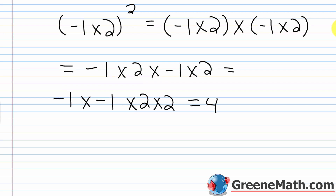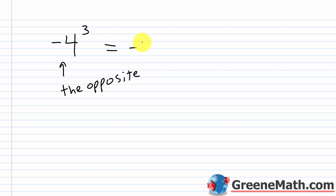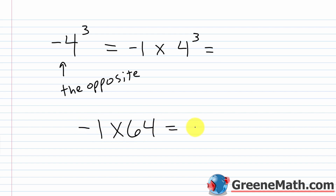There are scenarios where you get the same result whether or not you use parentheses. For example, negative 4 to the third power written without parentheses technically means the opposite of 4 cubed. We can write it as negative 1 times 4 cubed. Following order of operations: 4 cubed is 4 times 4 times 4 — that's 16 times 4, which is 64. So this gives negative 1 times 64, which is negative 64.